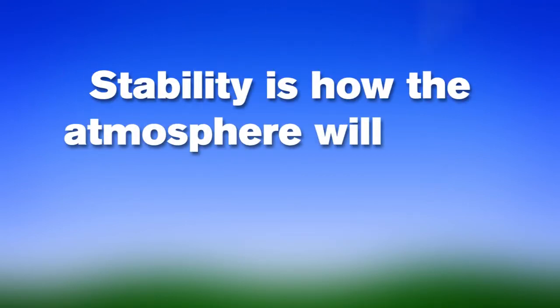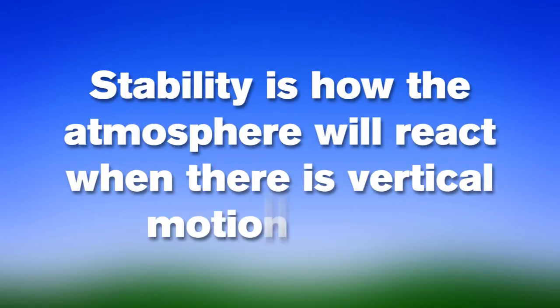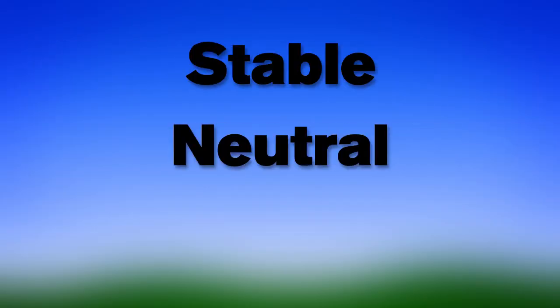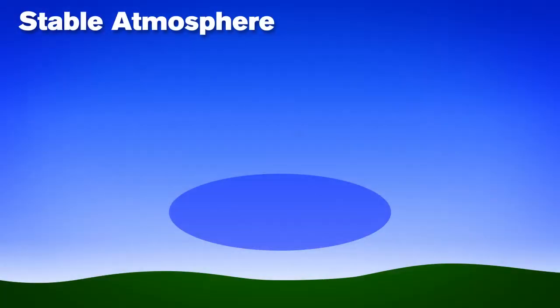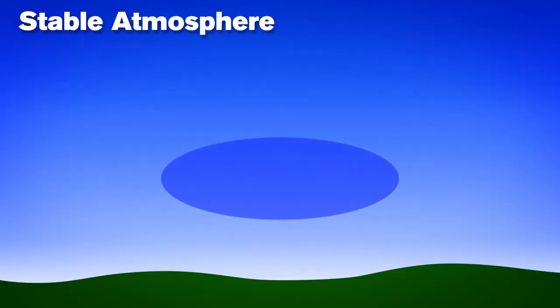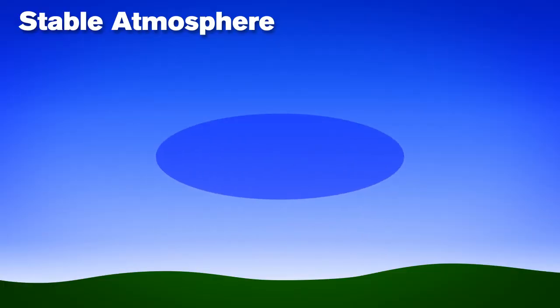Stability is how the atmosphere will react when there is vertical motion of air. There are three types of stability: stable, neutral, and unstable. A stable atmosphere is one where, when the air is lifted, the air will return to its original position.